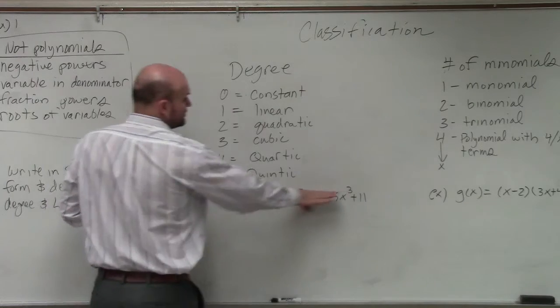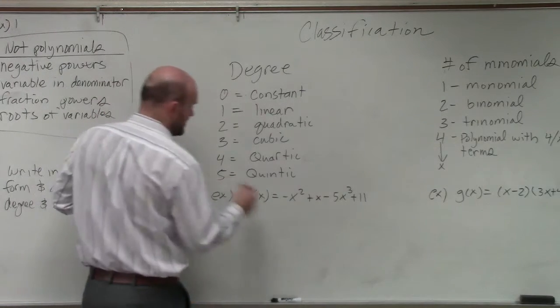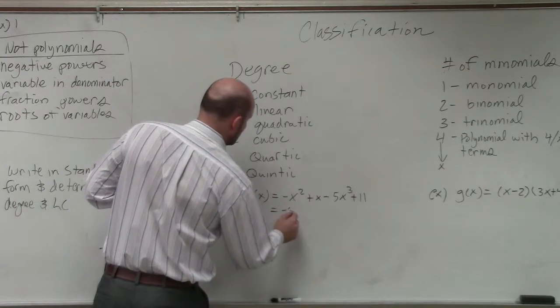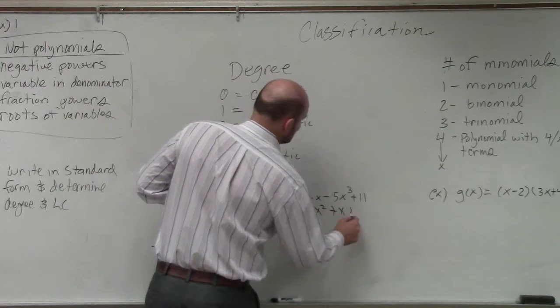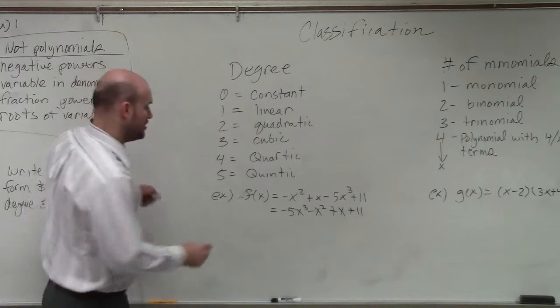So in this one, we do not have this in standard form, so I'm going to write this into standard form with negative 5x cubed minus x squared plus x plus 11. Now that is in standard form,